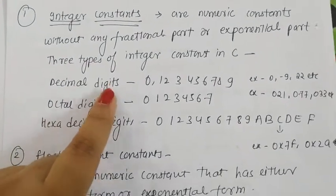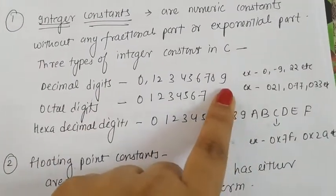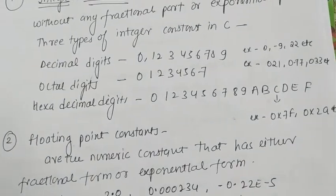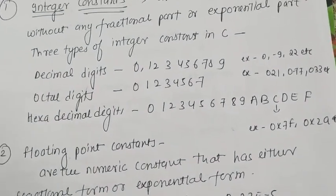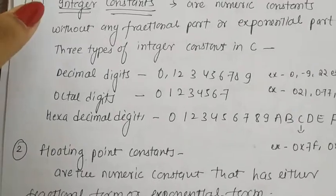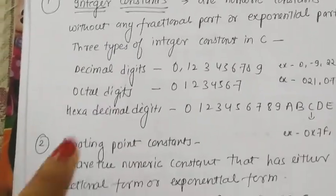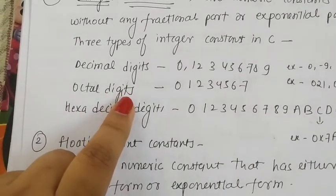Decimal integer constants use digits 0 to 9. Octal digits use 0 to 7. When we study in first year, we learn about hexadecimal numbers, octal numbers, decimal numbers, and binary numbers. For octal digits, it's only 0 to 7.